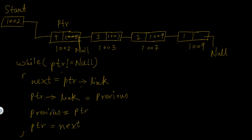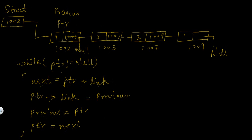Now previous was null but previous is now assigned the value of ptr, and the value of ptr is 1002, so previous now means this first node. Then ptr will be assigned the address of the next node — I had already stored that address in next — so ptr now means this second node.